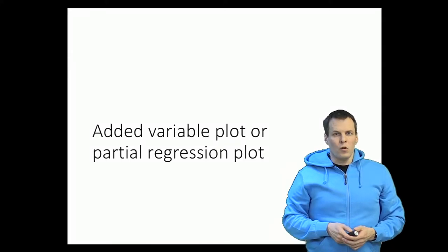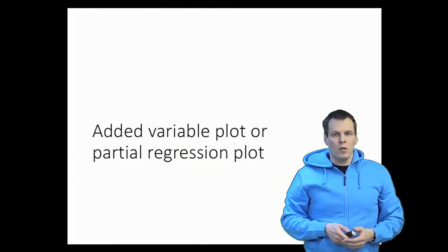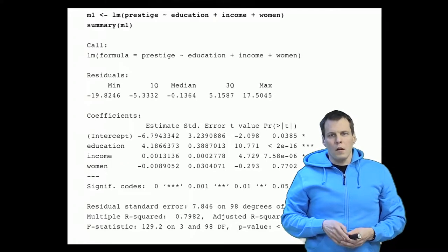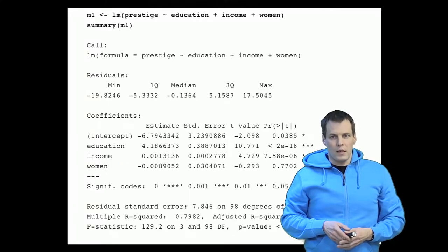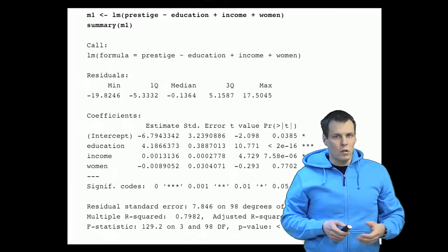The added variable plot, or partial regression plot, is one of the more useful diagnostic plots after regression analysis. This plot also demonstrates some features of regression analysis. Let's take a look at what the partial regression plot actually does — we need some data and a regression model to do the plot.